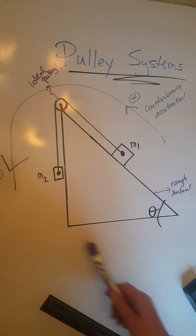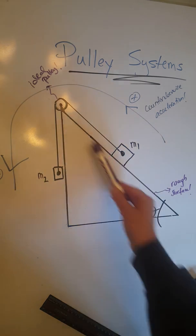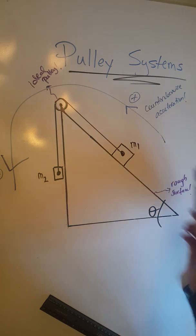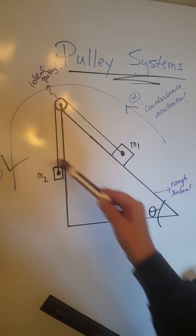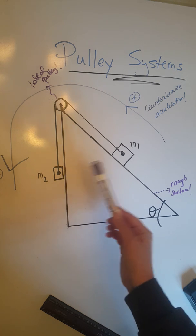In this case, we have an inclined plane of angle of inclination theta, with the ramp being a rough surface, an ideal pulley, and one string that connects objects M1 and M2.